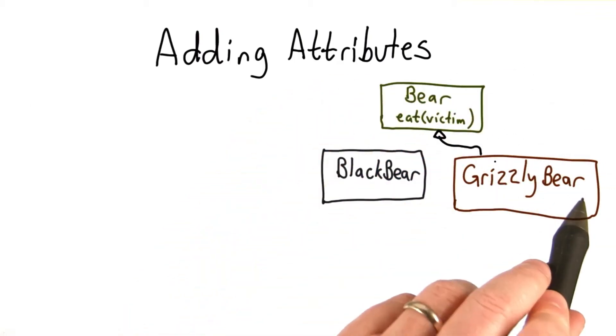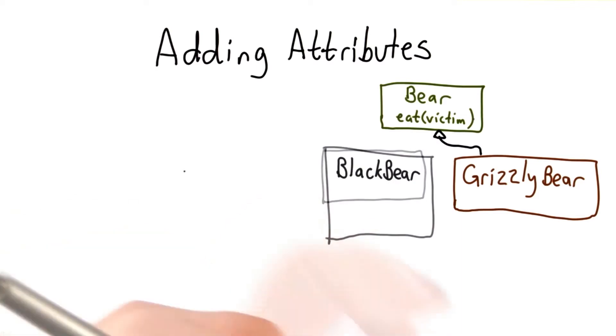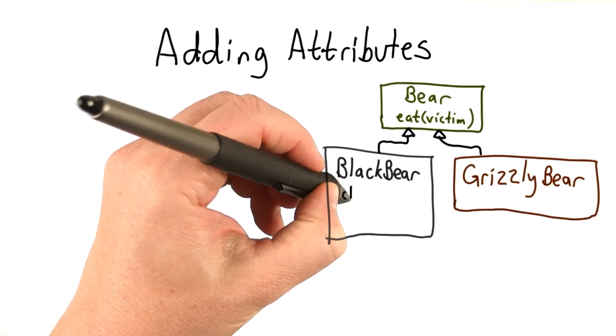We've seen we can create derived classes, and they inherit attributes from their base class. We can create another derived class - we'll make a BlackBear. We can add attributes to our derived classes.